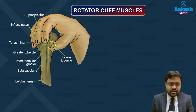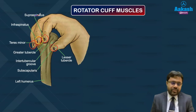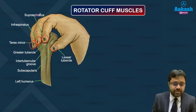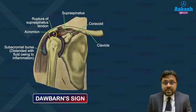To summarize insertions: subscapularis inserts into the lesser tubercle of the humerus. Supraspinatus, infraspinatus, and teres minor insert into the greater tubercle of the humerus — from superior to inferior respectively — forming the rotator cuff insertions.